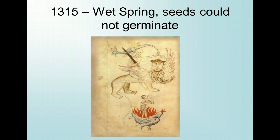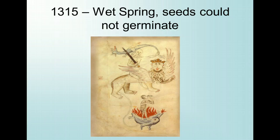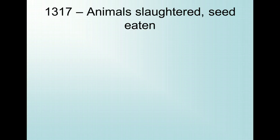The spring and summer of 1316 were wet and cold again. Peasant families now had less energy from which to till the land needed to harvest to make up for the previous shortfall, and possessed a much smaller food supply in reserve to sustain them until the next harvest. By the spring of 1317, all classes of society were suffering, although, as might be expected, the lower classes suffered the most.